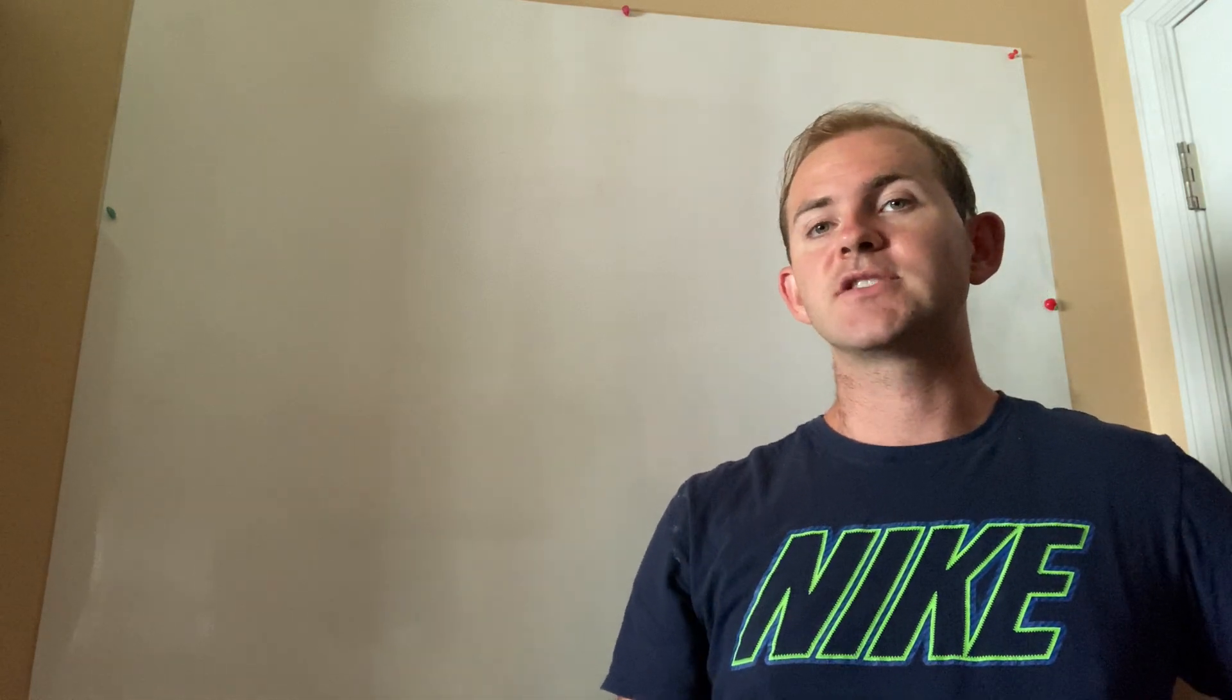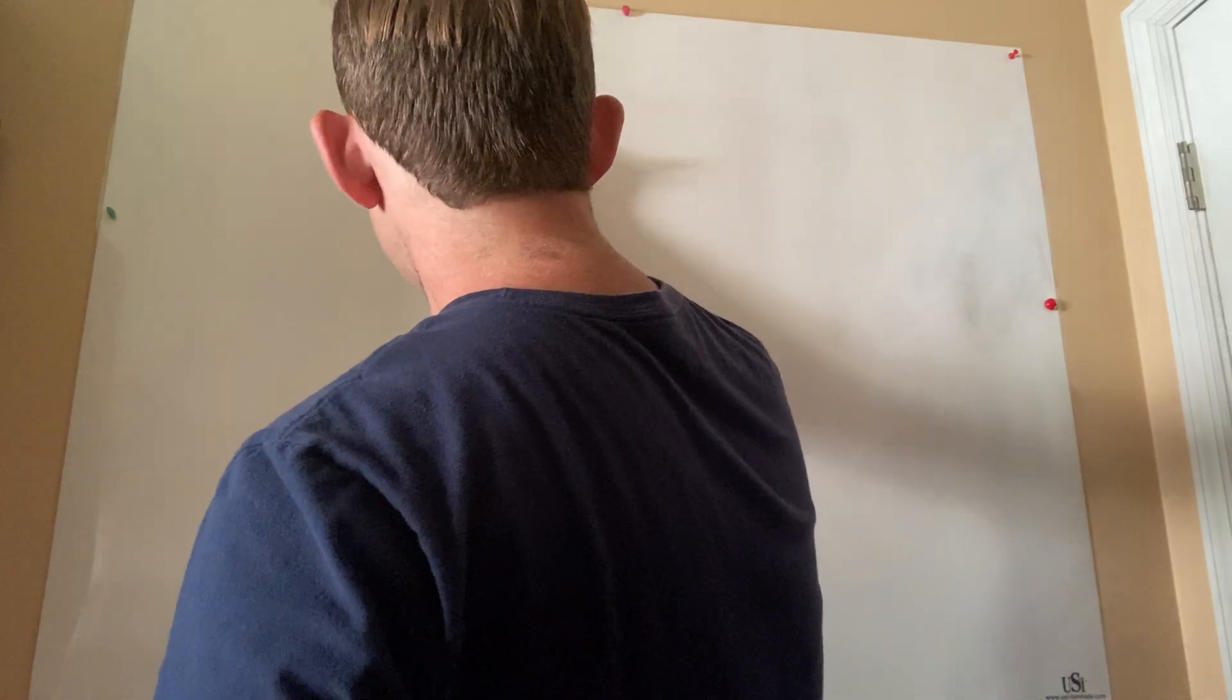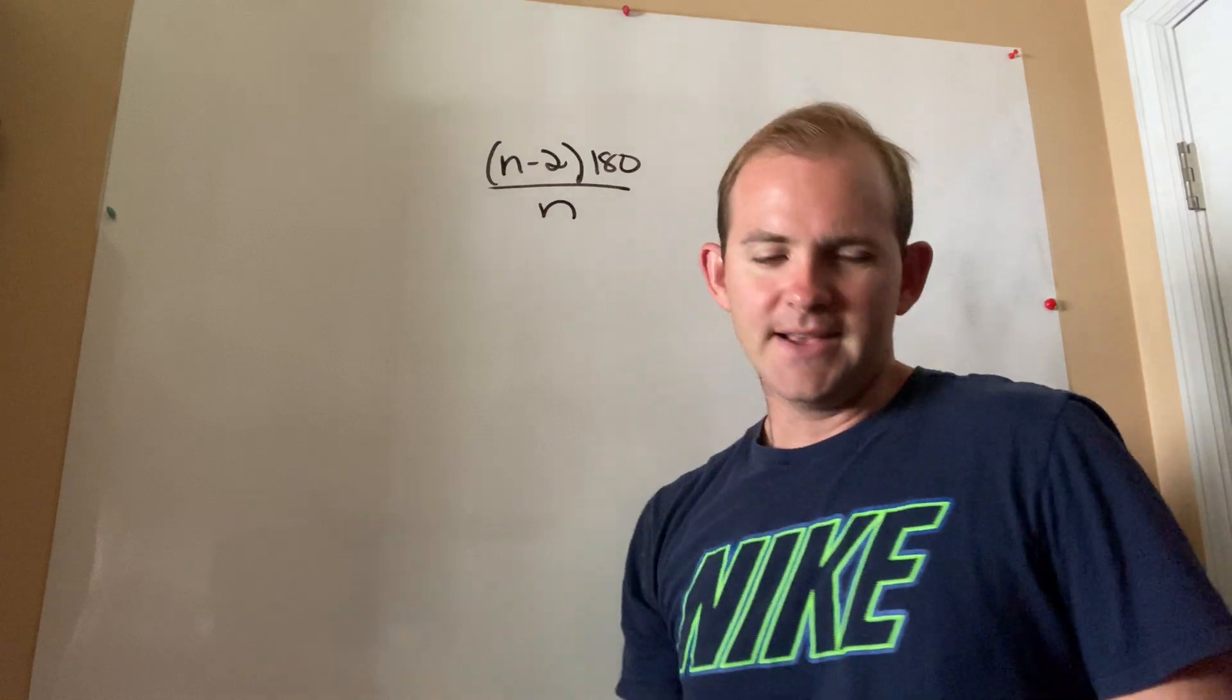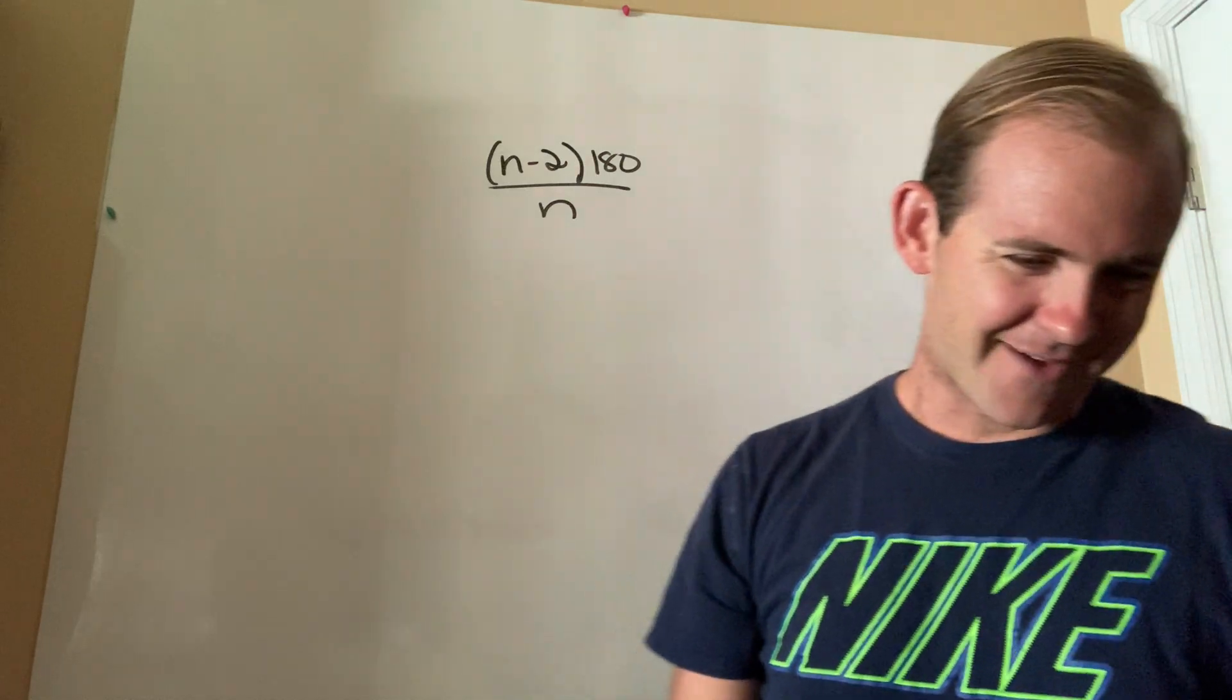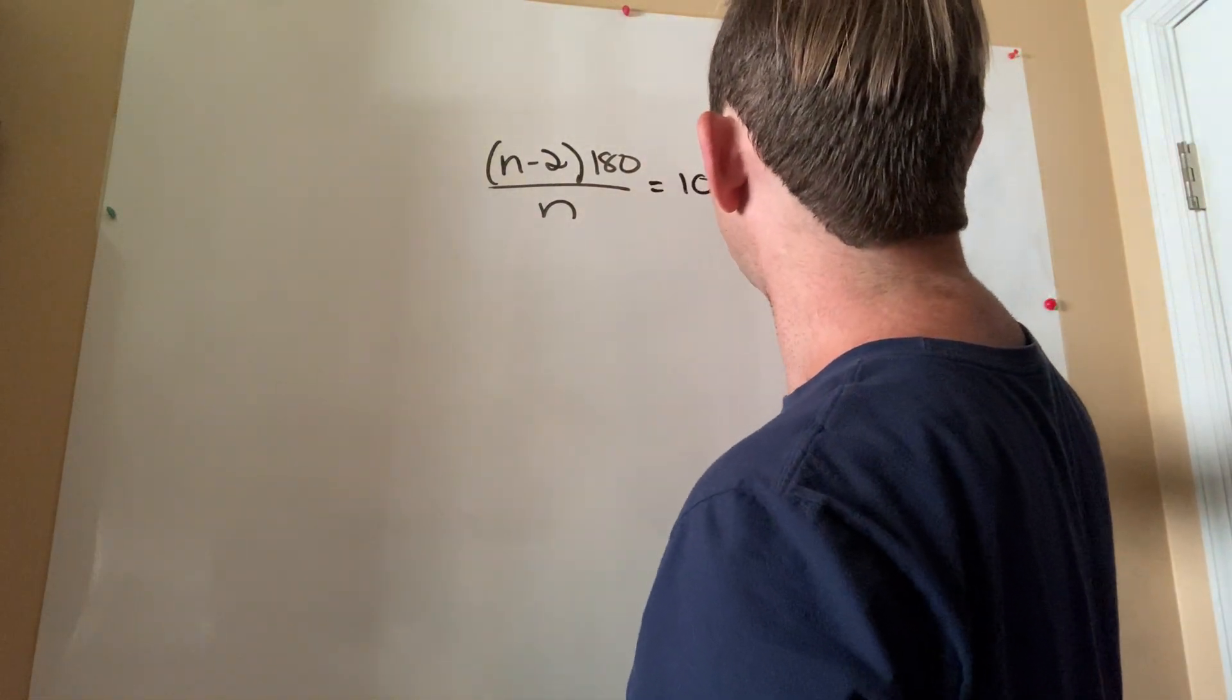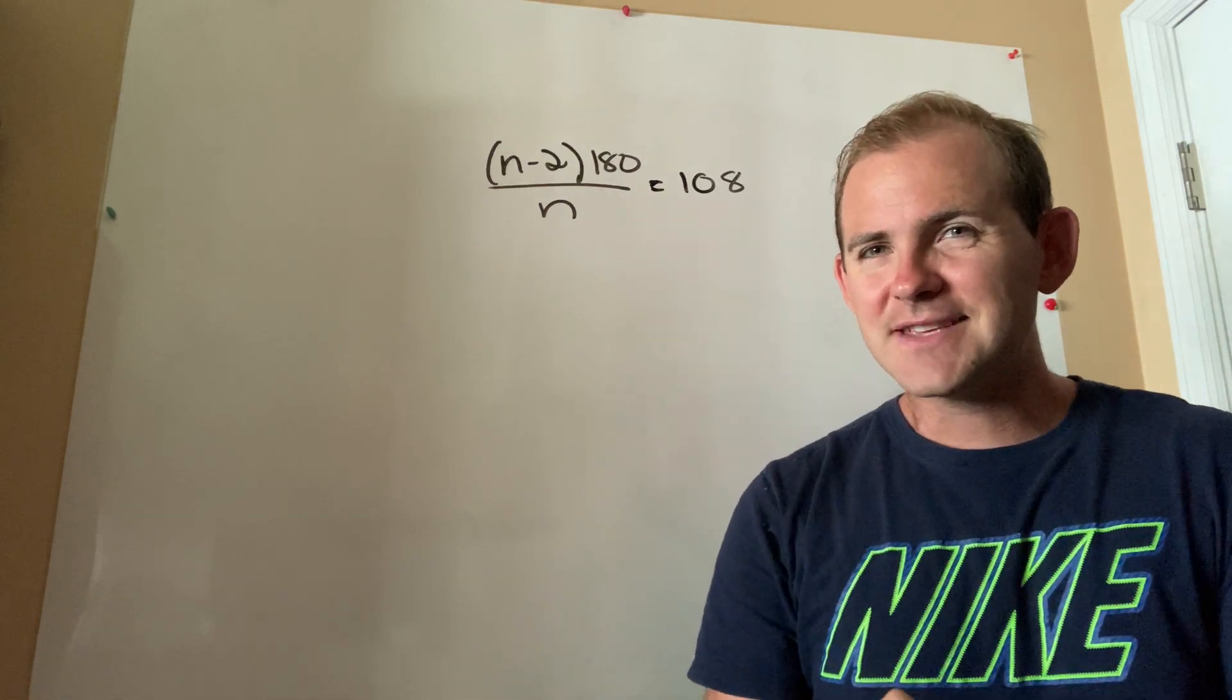Which theorem do I need? n minus 2 times 180 or n minus 2 times 180 over n? Did they use the keyword regular? Yes, they did. So because they use the keyword regular, that clues me in to the fact that I need this formula right here. Now that they give me the number of sides, do you see like five sides, six sides, seven sides? They did not. So what that means is we're actually given the answer to this. We're actually given the result 108. Now the question here becomes, how exactly do I solve this?